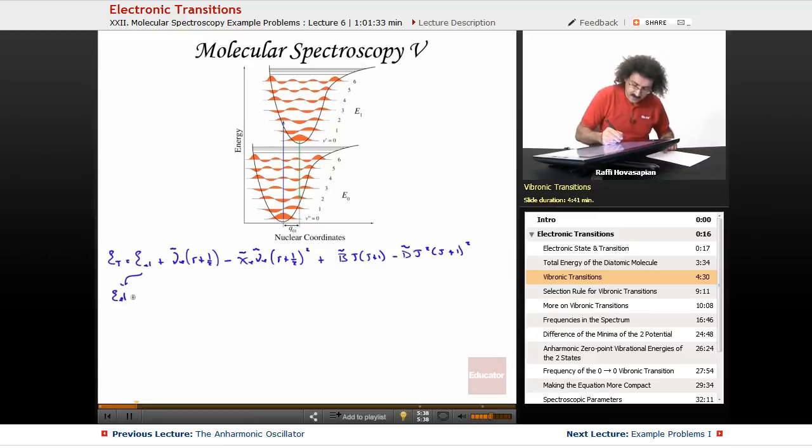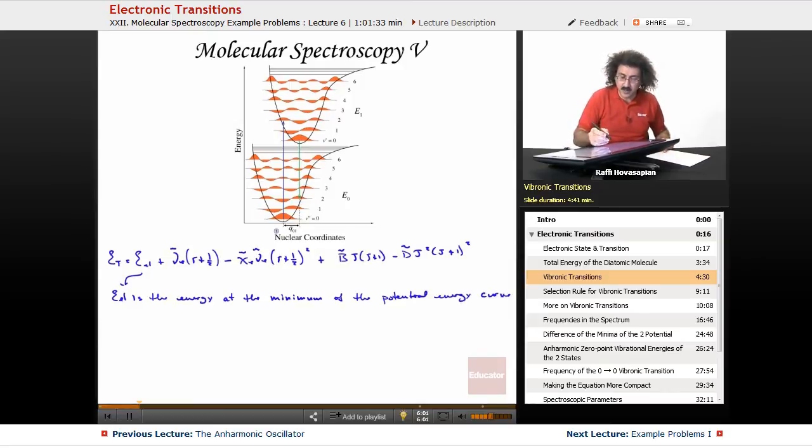E electronic is the energy at the minimum of the potential energy curve. In other words, in the ground vibrational state, it is that energy right there, whatever that happens to be. In the first excited state, it is that right there. So it's the energy at the minimum of the potential energy curve. That's what the electronic energy is.